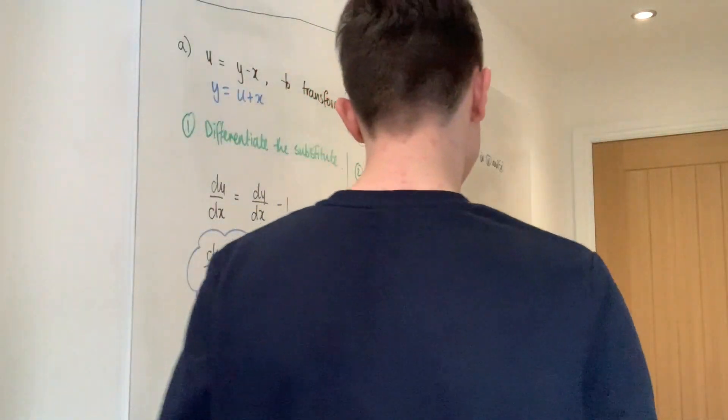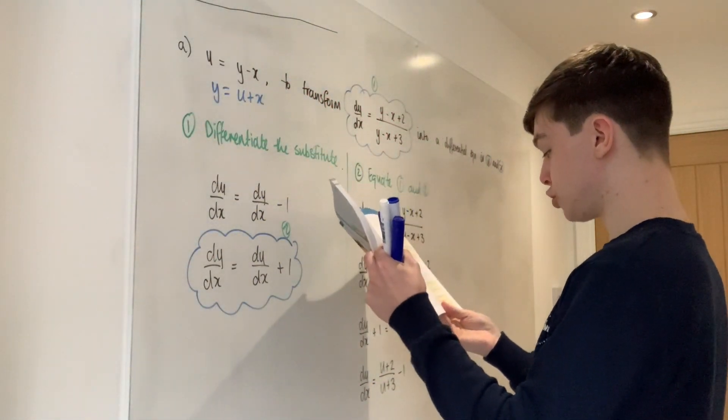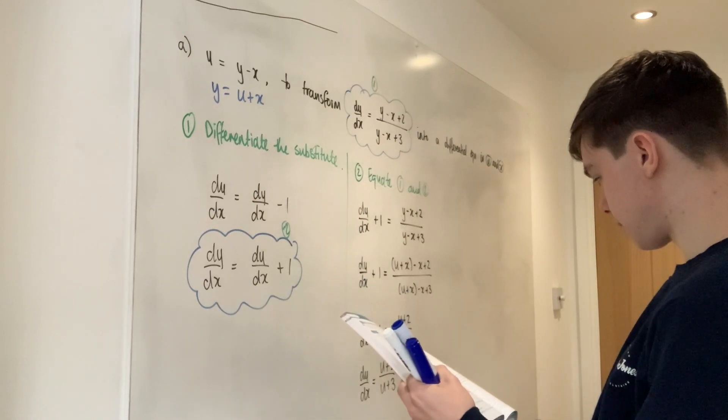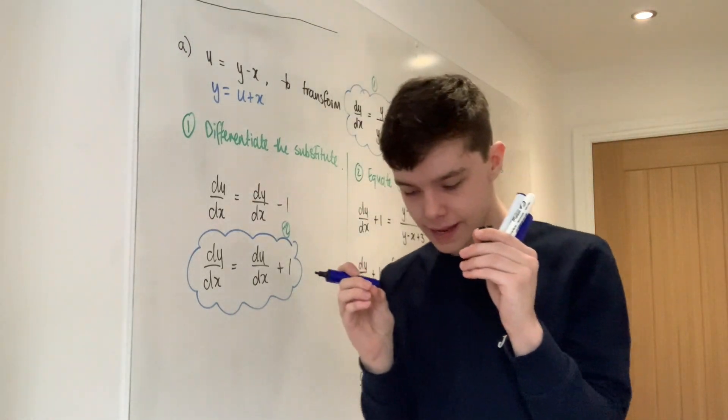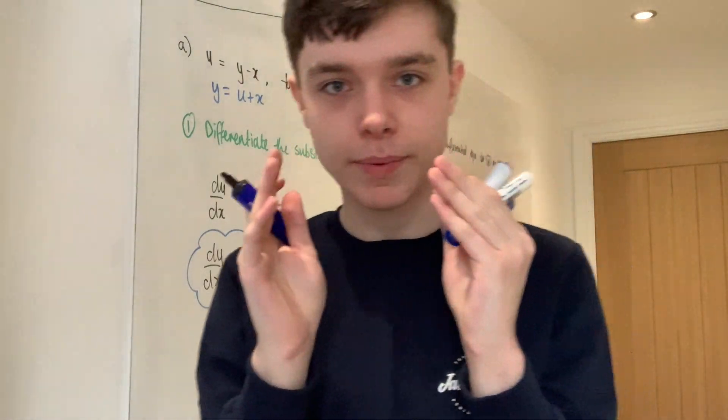So, let's get a nice colour. DU on DX plus 1, that's right, equals Y minus X plus 2 over Y minus X plus 3. Is that the window cleaners? Okay. DU DX plus 1 equals that will be U plus 2 over U plus 3 minus 1. That into there. Oh. Hmm. This is where it's okay to look at the solution.